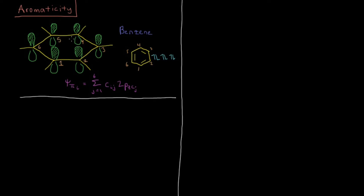Benzene, C6H6, is a circular six-membered aromatic ring conjugated all the way around. It has six carbon atoms each contributing one pz orbital and one electron to the pi system — six electrons total — so there are going to be three occupied pi orbitals and three virtual ones. Our wave function is going to be a linear combination of the pz orbitals on each of the six carbon atoms for each of those six pi orbitals.